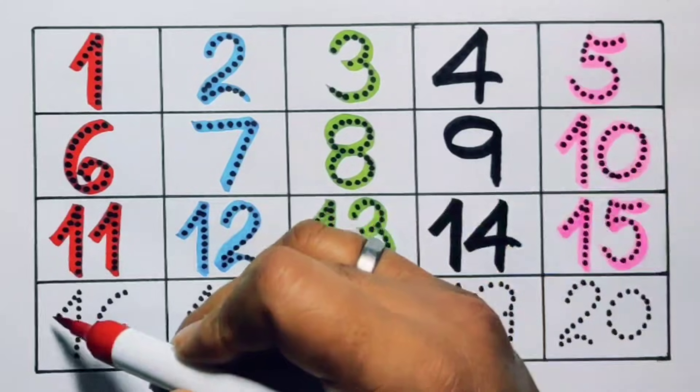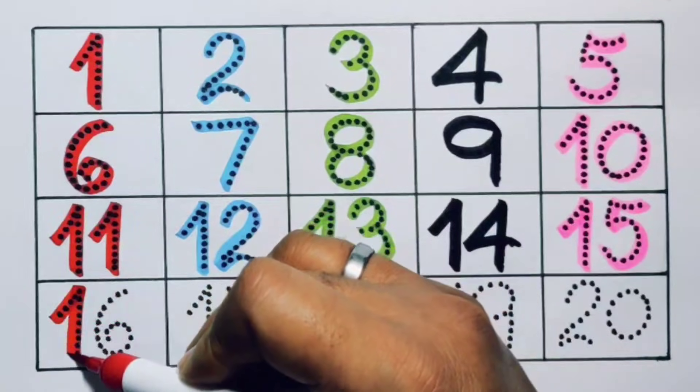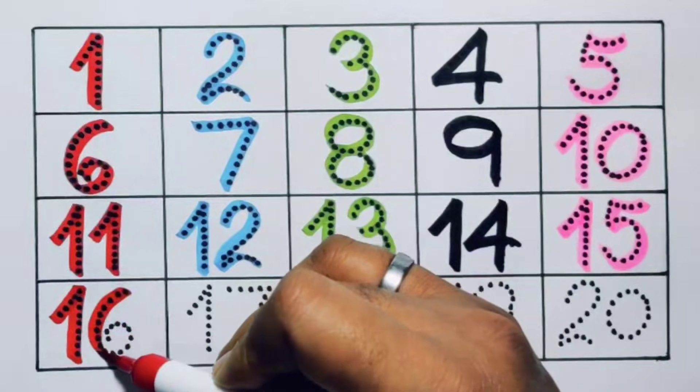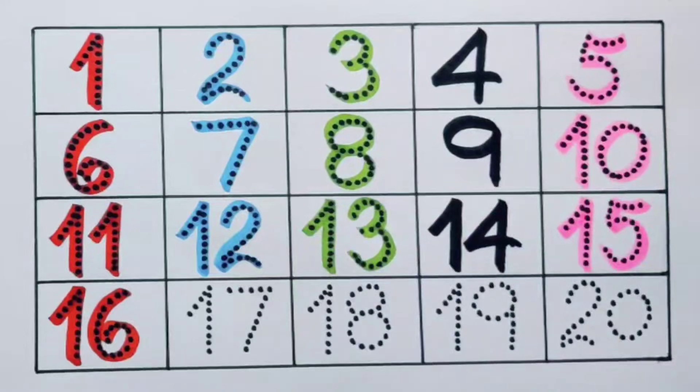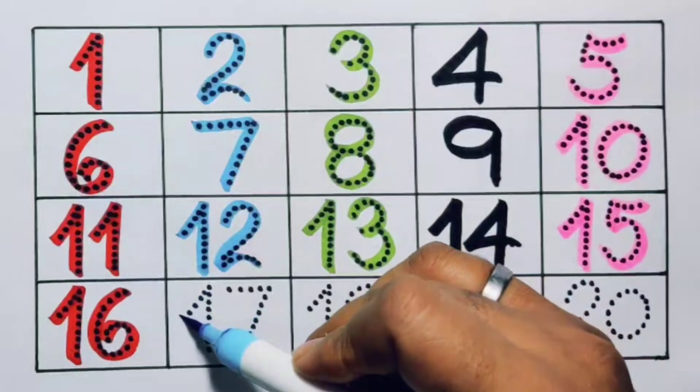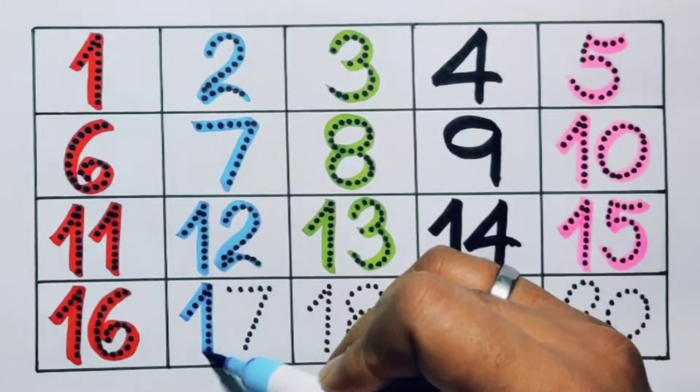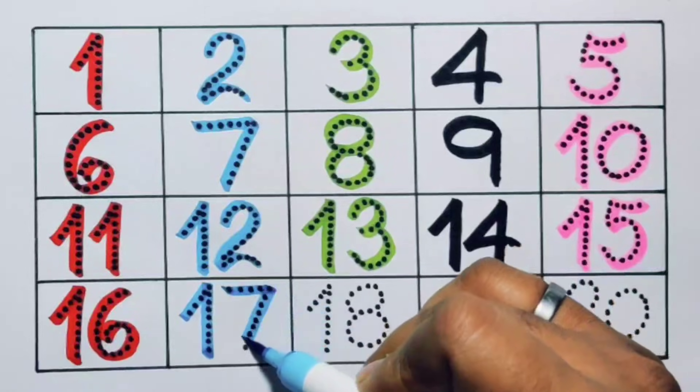Next kids, sixteen, one, six, sixteen, number sixteen. Next kids, seventeen, one, seven, seventeen, number seventeen.